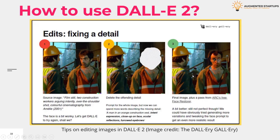You can influence the whole look of an image or something as specific as the style or dress of the subjects. It's unlikely that DALL-E 2 is going to give you the results you want the first time, but the prompt book also shows how to edit images by writing new prompts for specific elements within them. It also shows how you can use DALL-E 2 to combine separate images.